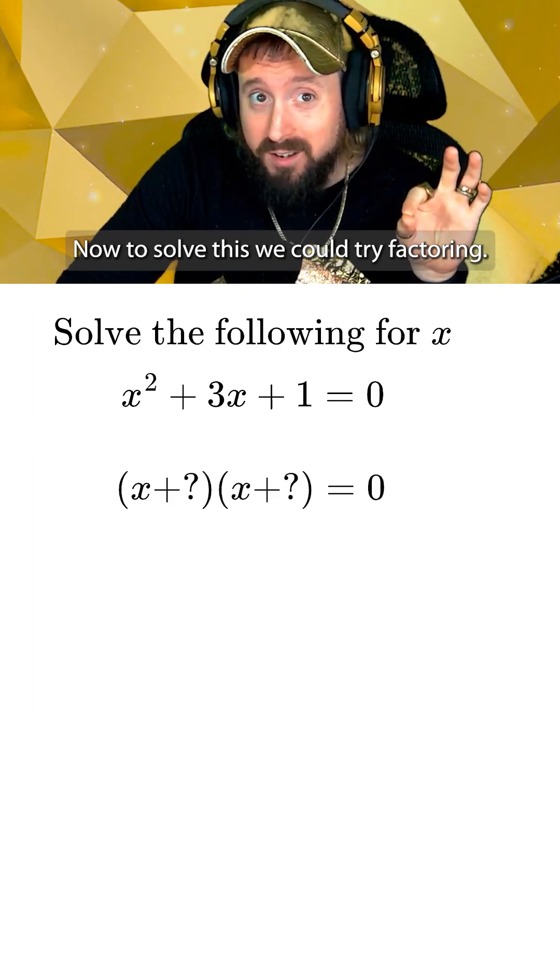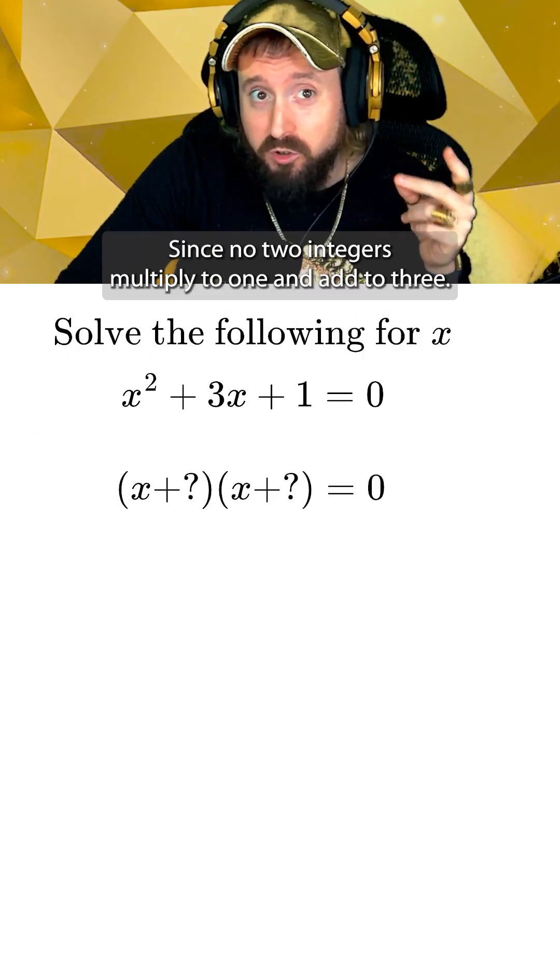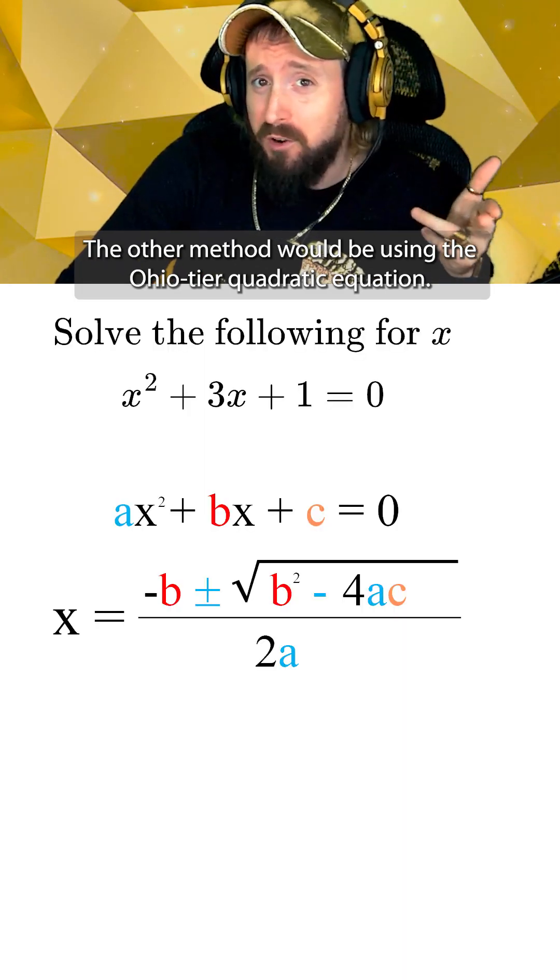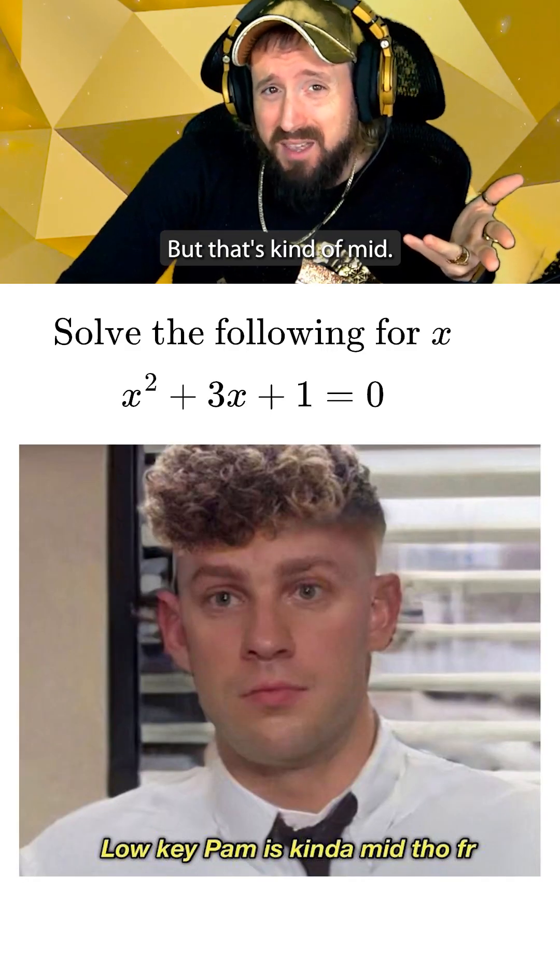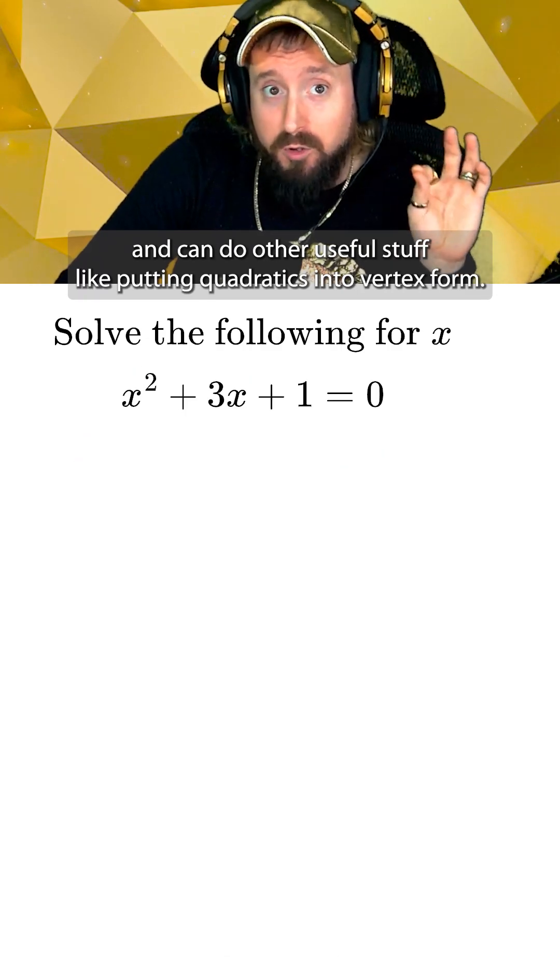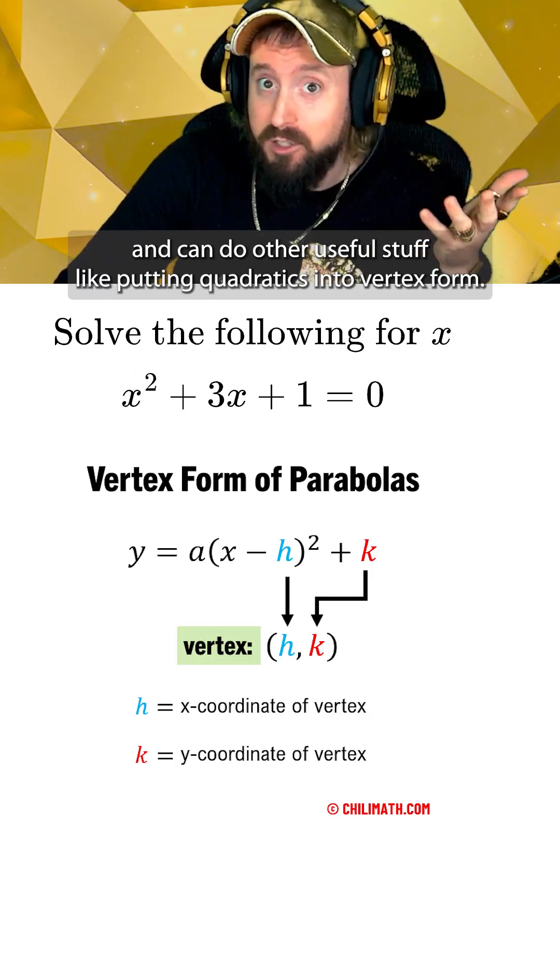Now to solve this we could try factoring but we're cooked since no two integers multiply to 1 and add to 3. The other method would be using the quadratic equation but that's kind of mid. So let's try completing the square which is low-key based and can do other useful stuff like putting quadratics into vertex form.